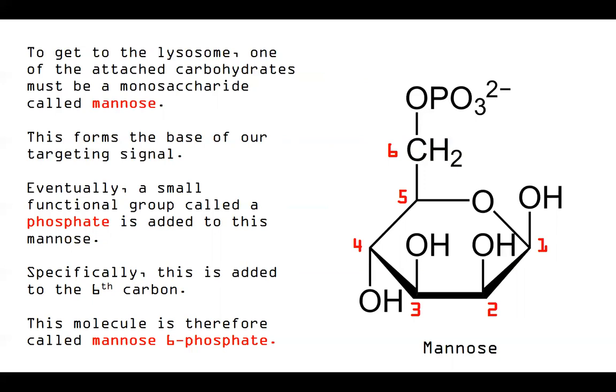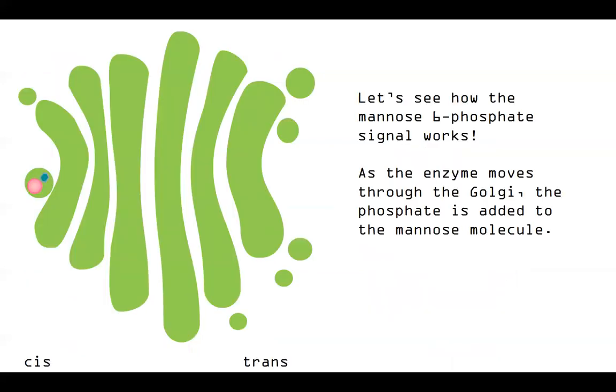So let's see how the signal works. As this enzyme moves through the Golgi, you can see we have our acid hydrolase here, our mannose. We've just added it. We're able to watch this traffic its way through the cisternae, eventually adding the phosphate. So phosphate added in the Golgi. It continues its way until it's ready to leave the trans face.